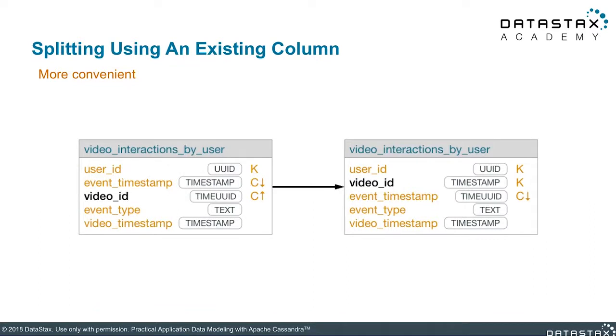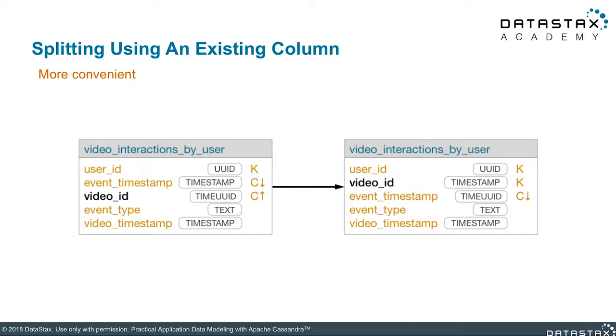Continuing with our example of the highly active user and their large partition, let's say we want to split the partition using an existing column. Looking at the primary key, if using event timestamp, the partition would store all user interactions that occurred at that specific point in time. This may not make much sense, since it is unlikely to have more than one interaction occurring within the same second. The next clustering column, VideoID, just so happens to be a good candidate. Instead of each partition storing all interactions for all videos a user has done, it will instead represent all interactions by that user for a specific video. All you need to do is move the VideoID column in the primary key so that it becomes part of the partition key, optimizing the table to better control the size of each partition.